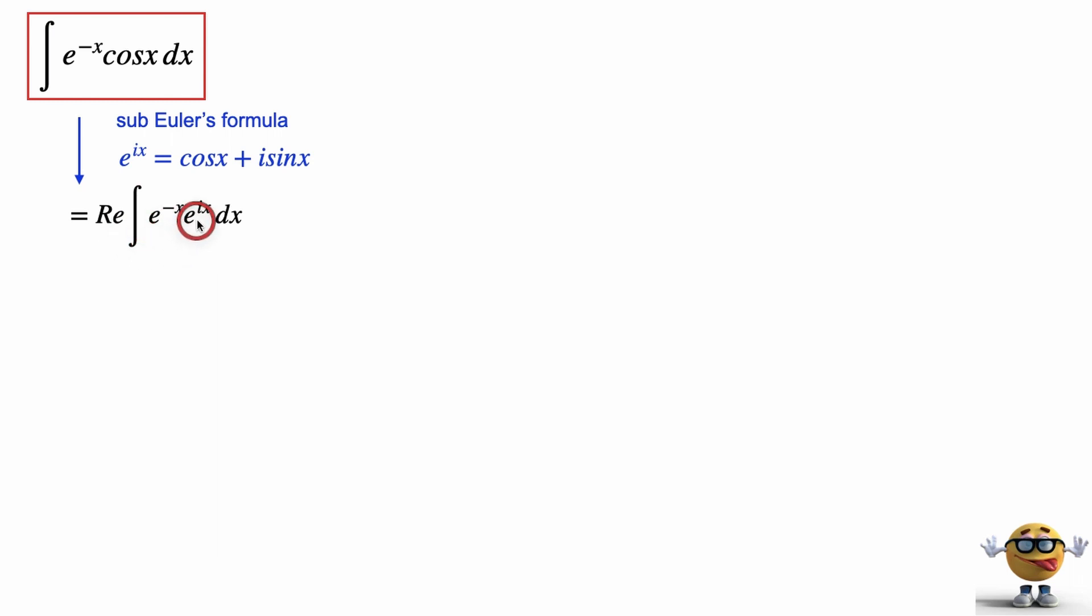e to the negative x times e to the ix. Here we can merge these powers together by adding the exponents. Now we've created one of the easiest integrals, so we can evaluate this